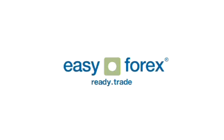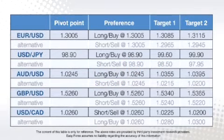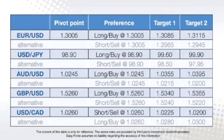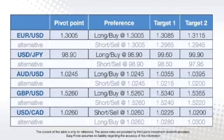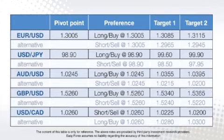Now let's take a look at what the currencies are doing this morning. The euro dollar pivot point is at 1.3005 with a preference to enter into long positions at 1.3005. The dollar yen pivot point is at 98.90 with a preference to enter into long positions at 98.90. The Aussie dollar pivot point is at 1.0245 with a preference to enter into long positions at 1.0245. The sterling dollar pivot point is at 1.5260 with a preference to enter into long positions at 1.5260. And the dollar CAD pivot point is at 102.60 with a preference to enter into short positions at 102.60.